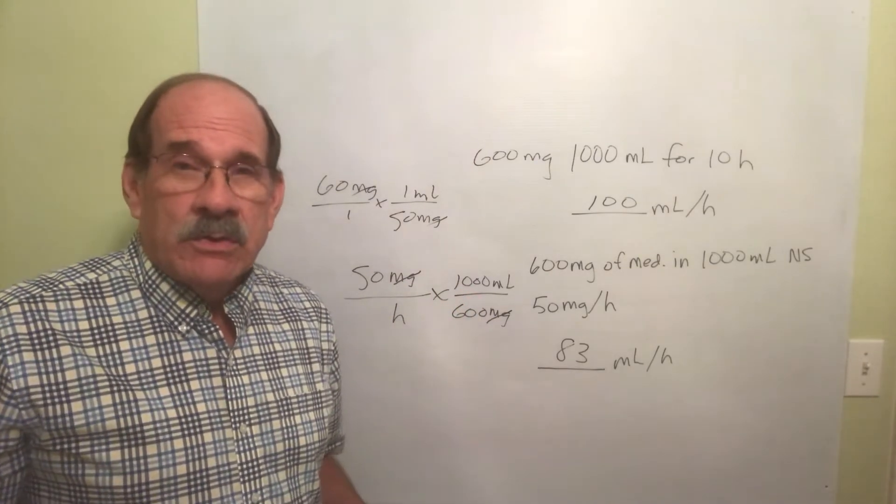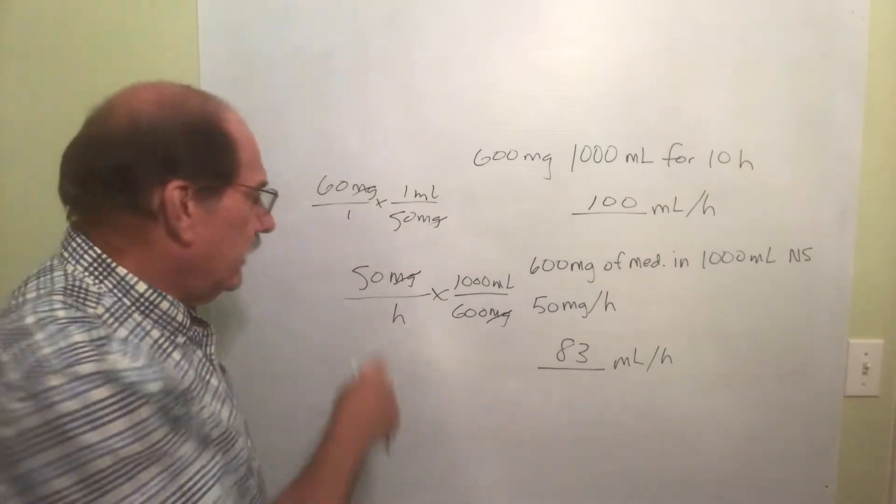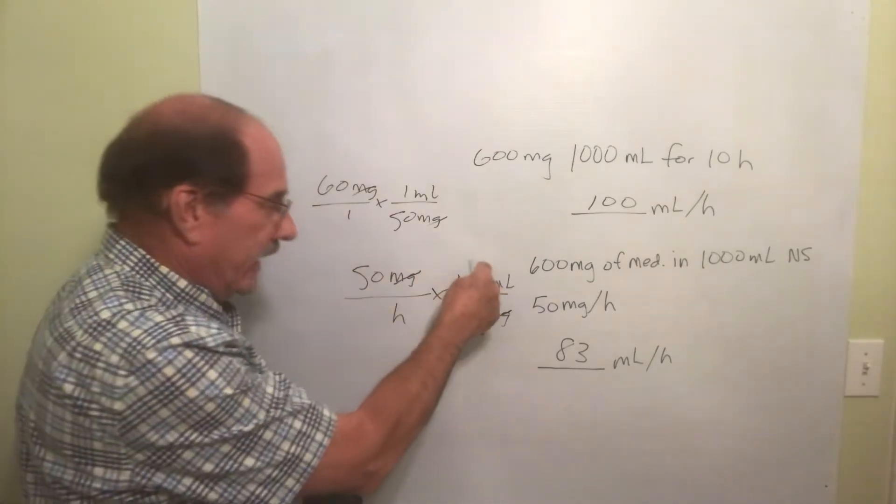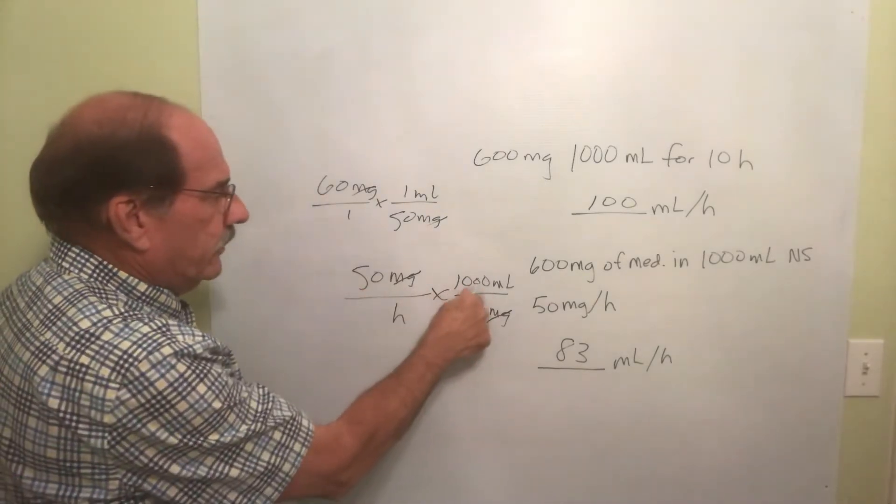If you cancel zeros it's going to be easier. If this gives you problems don't worry about it, you don't have to. You can still do it 50 times 1000 divided by 600. But look here, you have one, two, three, four zeros on the top, two on the bottom.